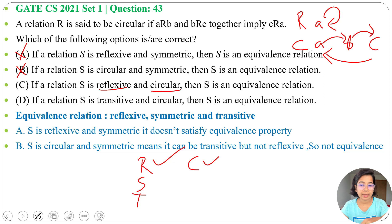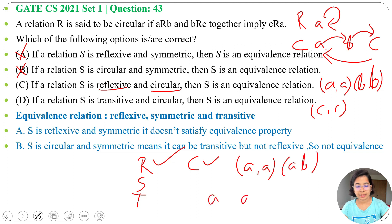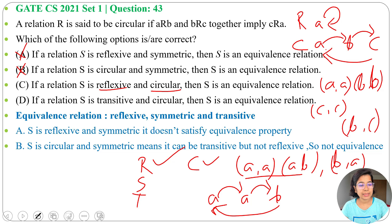Reflexive means A is related to A, B is related to B, and C is related to C. Now take AA and AB — using the circular property with A related to A and A related to B, we get B related to A. So it is symmetric. Similarly, from BB and BC, we get CB — meaning C is related to B, so symmetry holds throughout.